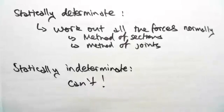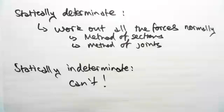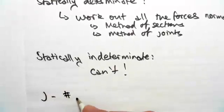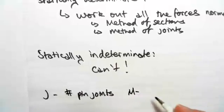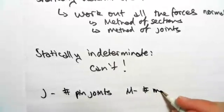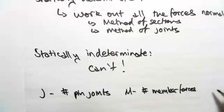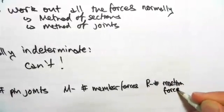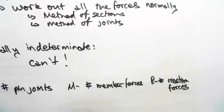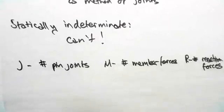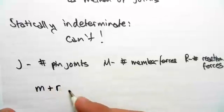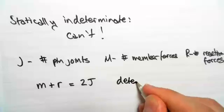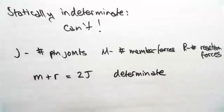The way we can find out whether something is statically determinate or statically indeterminate is to use this formula. For a jointed frame: J is the number of pin joints, M is the number of force members, and R is the number of reaction forces. If M plus R equals 2J, we can work out all the forces just using global equilibrium and similar methods.